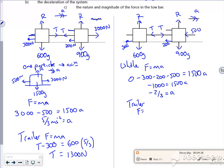Then if I look at the trailer again, doing F equals ma, there is no force in the direction of travel again. There's nothing going left to right on the trailer. It's minus T minus 300 is 600 lots of minus 2/3. If I rearrange it, it gives me a T value of 100 newtons.